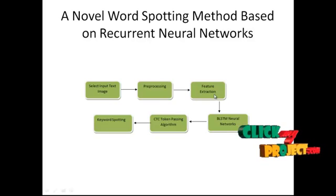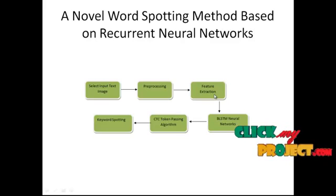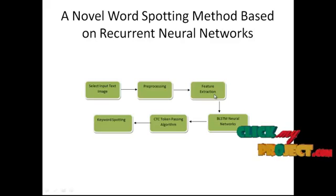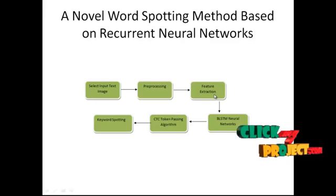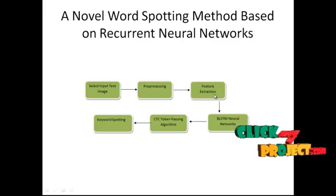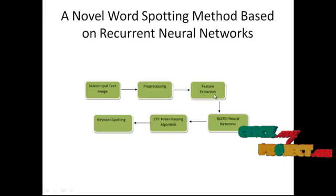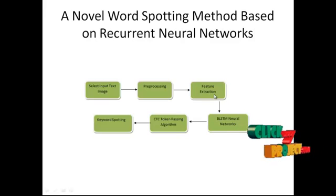After zonal feature extraction, certain features are extracted for the entire image based on regional properties, namely Euler number, regional area, and eccentricity. Euler number is defined as the difference of the number of objects and number of holes in the image. Regional area is defined as the ratio of number of pixels in the skeleton to the number of pixels in the image. Eccentricity is defined as the smallest ellipse that fits the skeleton of the image.